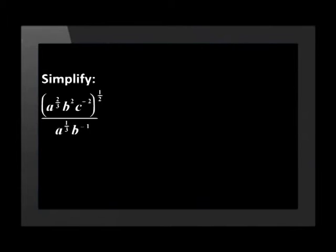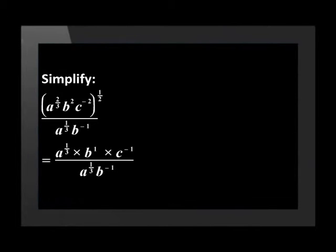This problem involved a lot of multiplying and dividing powers. Let's try a more difficult one where the exponents are fractions. Simplify the following expression. On top we have in brackets A to the power of 2 thirds times by B squared times by C to the power of negative 2, all to the power of a half. At the bottom of the fraction we have A to the power of a third times by B to the power of negative 1. Now on top let's raise all the powers inside the bracket to the power outside the bracket. This will give us A to the power of 1 over 3, B to the power of 1 and C to the power of negative 1.